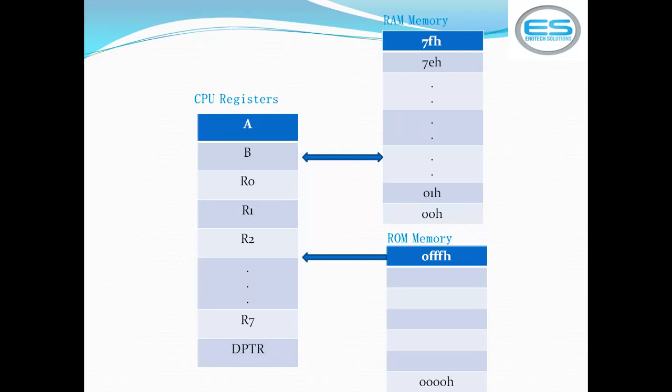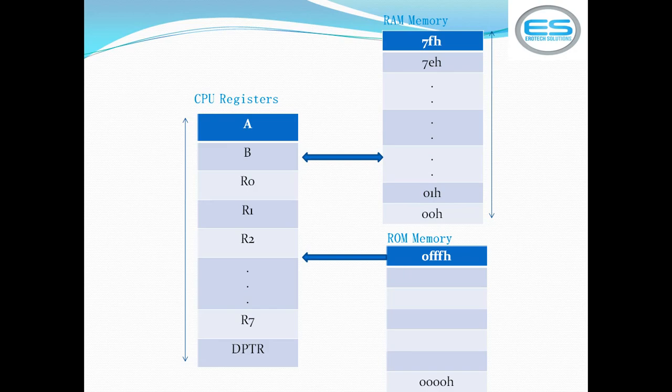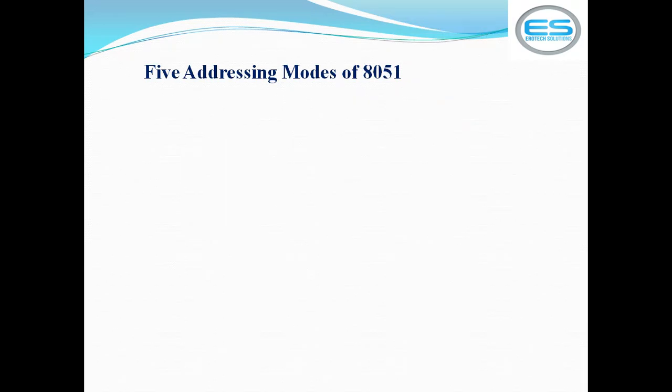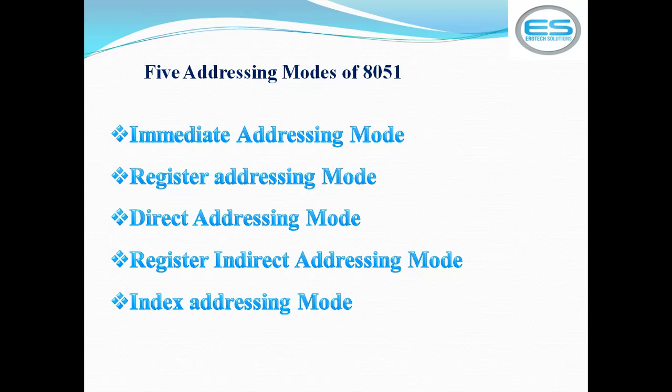The basic definition of addressing mode is very clear: it is the way of accessing data. These registers you can use for your programming in assembly language. There are 5 addressing modes from the 8051 controller: immediate addressing mode, register addressing mode, direct addressing mode, register indirect addressing mode, and indexed addressing mode.